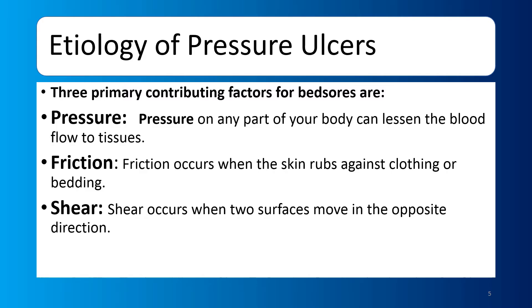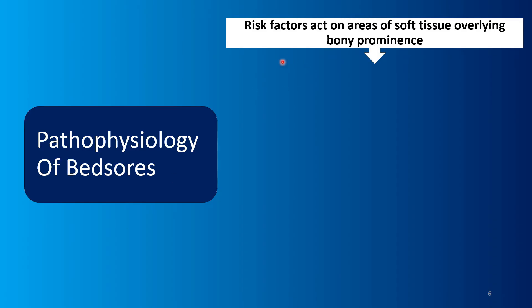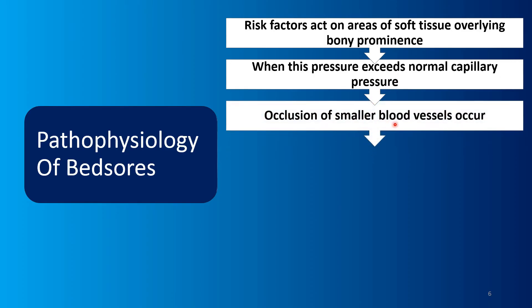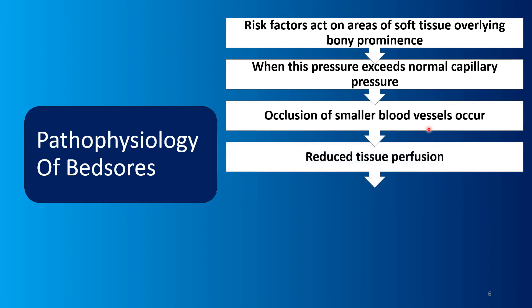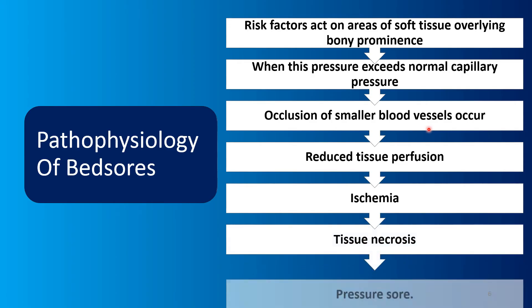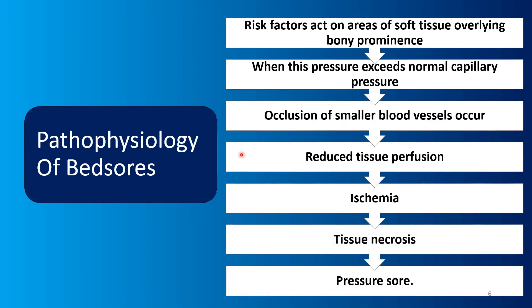Now let's look at the pathophysiology. The risk factors act as compressive forces on soft tissue against the underlying bone. When this pressure exceeds normal capillary pressure, occlusion of smaller vessels occurs. When pressure is constant, the blood vessels become occluded, blood supply to the tissue is insufficient, the tissue enters an ischemic phase, then tissue necrosis occurs, and ultimately a pressure sore develops.